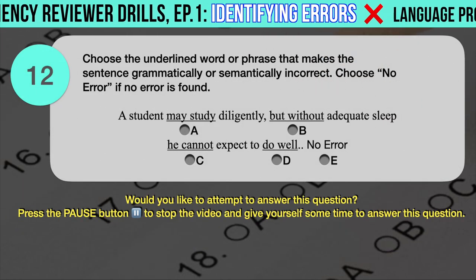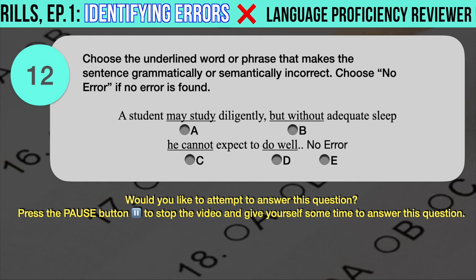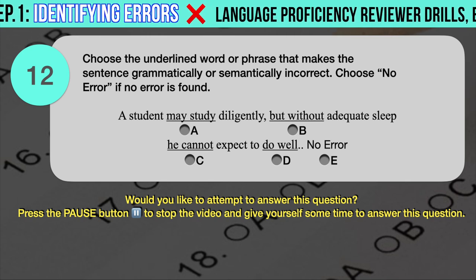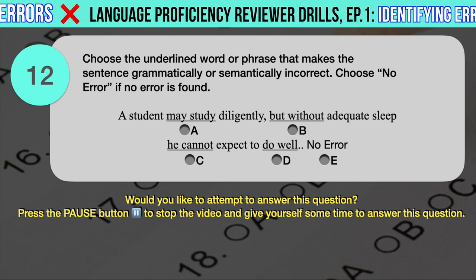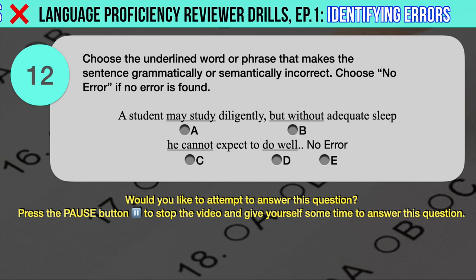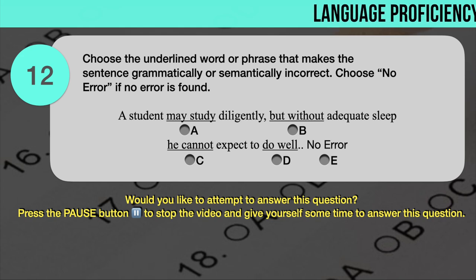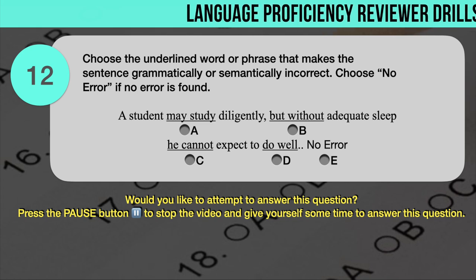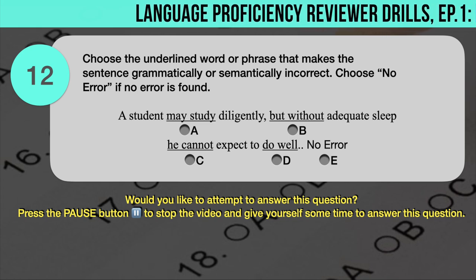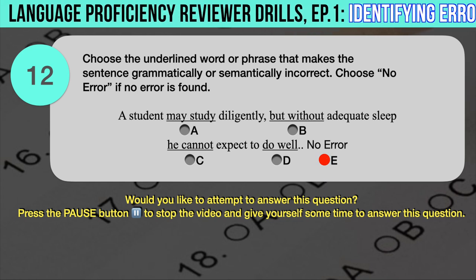Drill question number 12. 'A student may study diligently, but without adequate sleep he cannot expect to do well.' The underlined words are: A. May study, B. But without, C. He cannot, D. Do well. The correct answer is E — there appears to be no error in the given sentence.